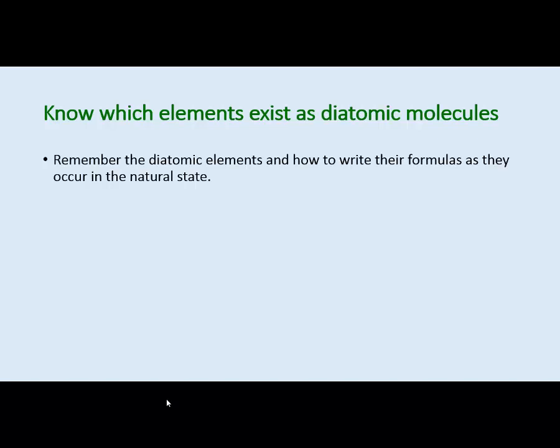If you go to the element with atomic number 7, that would be nitrogen — one of our diatomic elements. Going right on the periodic table, we have oxygen, then fluorine, then going down from fluorine we have chlorine, bromine, and iodine as diatomic elemental molecules. Hydrogen is the seventh, on the other side of the periodic table. From nitrogen to iodine on the periodic table, you see a nice seven shape, reminding you there are seven diatomic elements. These are the most stable forms of these elements in nature.